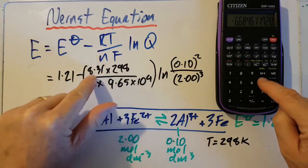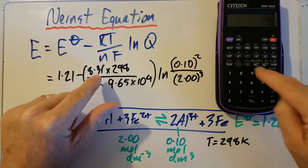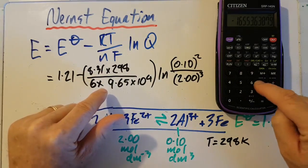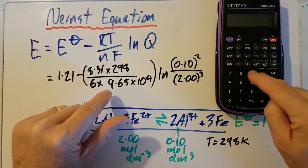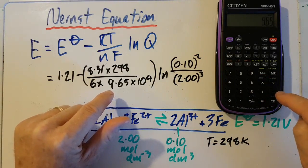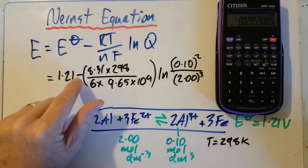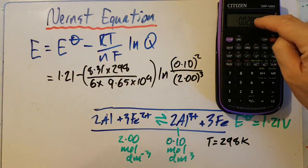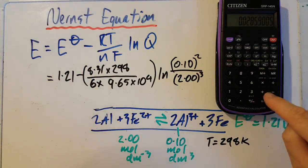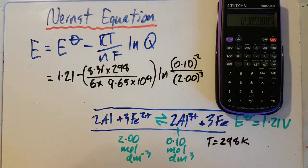So 0.1 times 0.1 divided by 2, divided by 2, divided by 2. That's that number there. Let me ln it. All right. Now I'm going to take the top of the equation, multiply by 8.31, multiply by 298. Excitement continues. Divide by 6. Divide by 9.65 times 10 to the 4 equals. OK. So that's not much extra volts, is it? All right. Change the sign. Add 1.21.